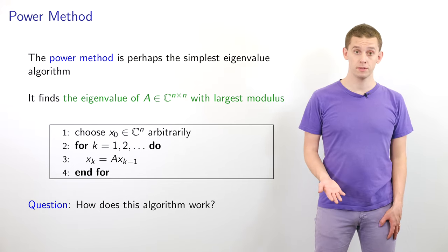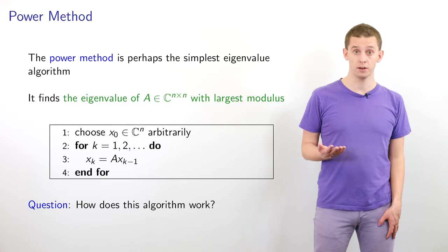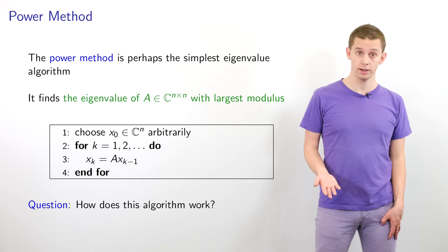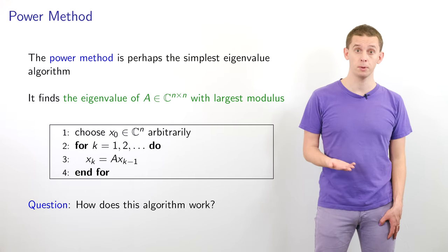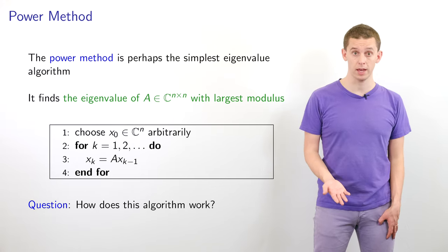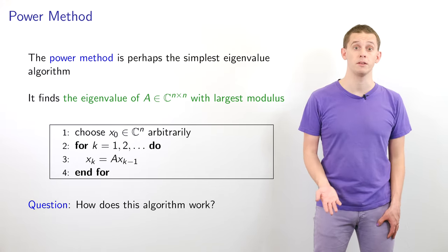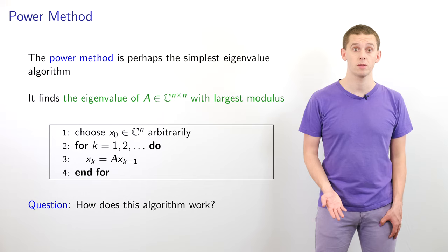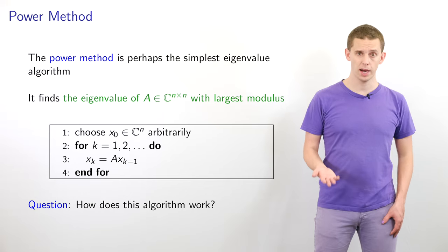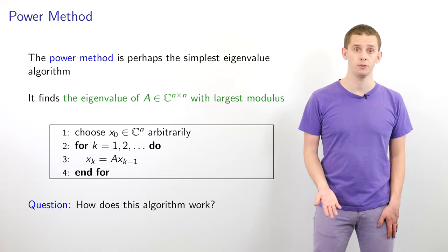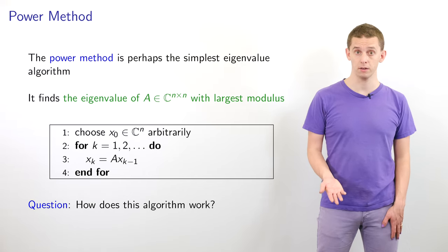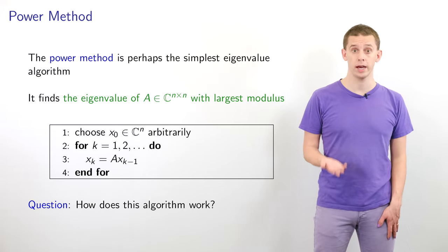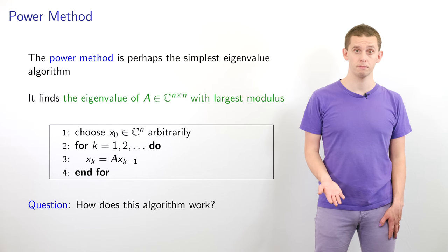So effectively, we are taking that initial vector and applying our matrix A to it many times. How does this allow us to extract that eigenvalue with largest modulus?